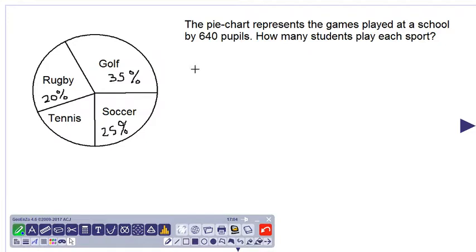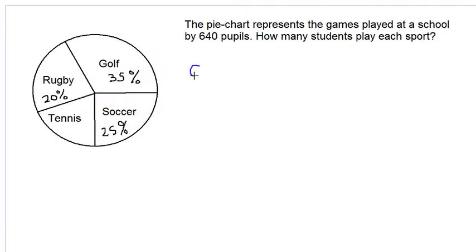So let's start with golf and we see that golf is 35%, so let's change the percentage to a fraction. So we have 35 over 100. 35 over 100 is the fraction of students who play golf and now we are multiplying by 640 to get the amount of students who play golf.